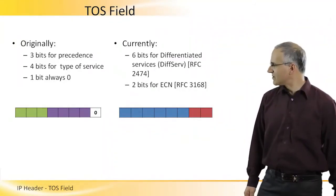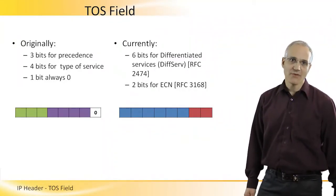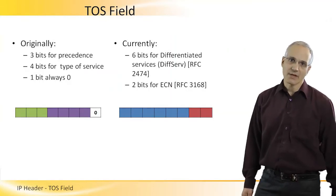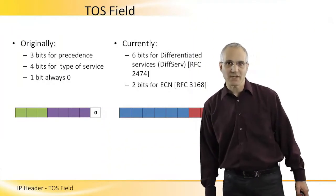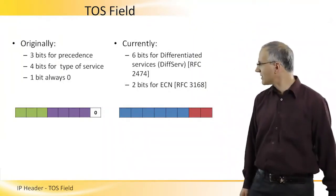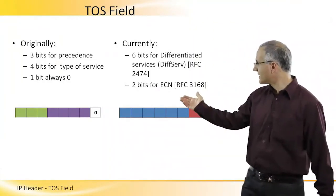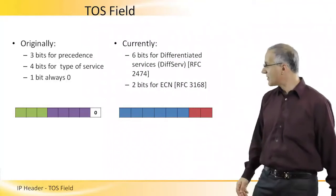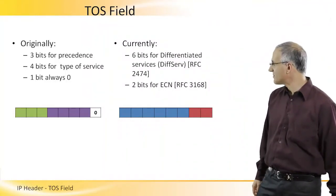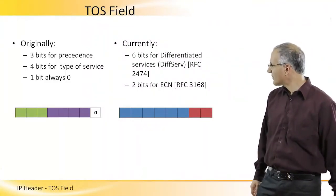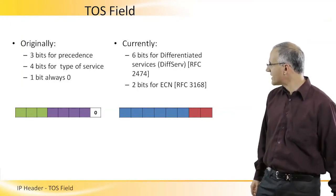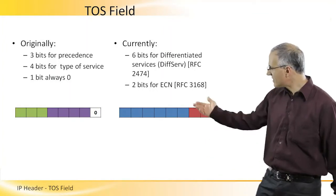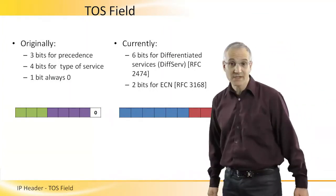However, this standard was changed every so often, and currently the allocation of the Type of Service field is as follows. There are six bits for Differentiated Services (DiffServ), as appeared in RFC 2474, and then the two additional bits are for ECN, Explicit Congestion Notification, as appeared in RFC 3168.